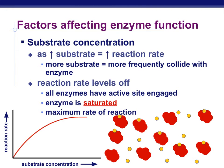Substrate concentration will also affect the function. As we increase the substrate, we'll also increase the reaction rate. With more substrate, you're going to have a greater likelihood for more frequent collisions with the enzyme. Again, the reaction rate will level off. All the enzymes have an active site engaged, and therefore there are no extra enzymes available — they can't find a substrate. We call this saturation, and that causes the maximum rate of reactions between the substrate and the enzyme.